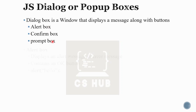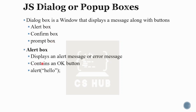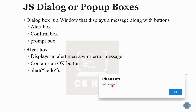The alert box displays an alert message or error message. It contains only an OK button. For example, alert('hello') shows the message with an OK button. When the user clicks OK, the message disappears. It is used to show alert messages or error messages.